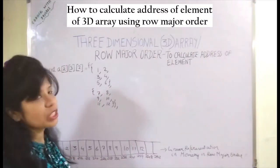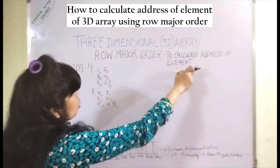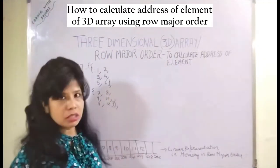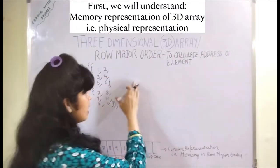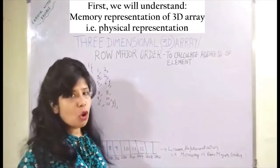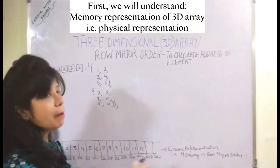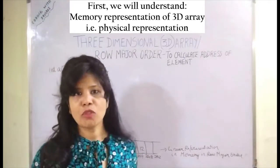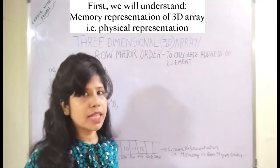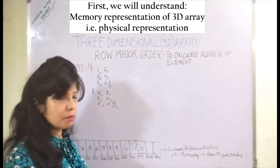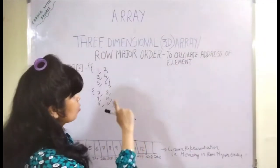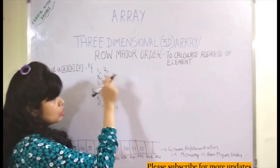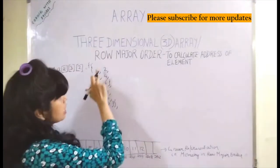Today we will be seeing how to calculate the address of an element in case of a three-dimensional array using the row major order. We know that a 3D array is logically represented in matrix form, but in memory it is not present in 3D form. Memory is a long tape of bytes in linear, one-dimensional form. We will see how to calculate the address of any given element using row major order.